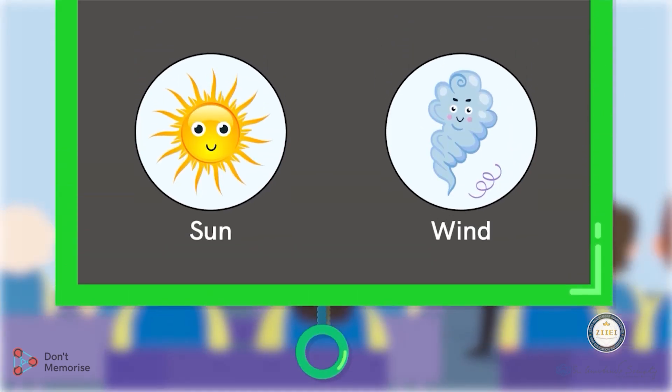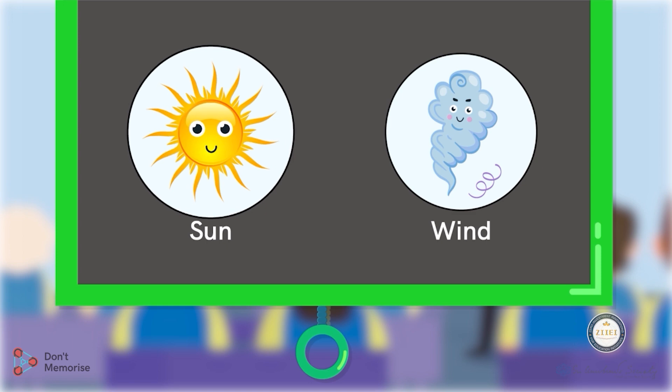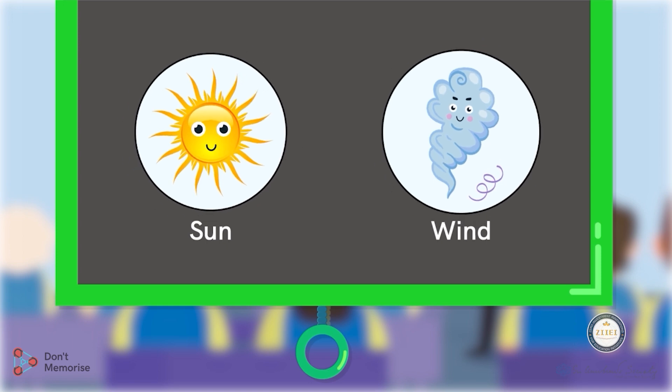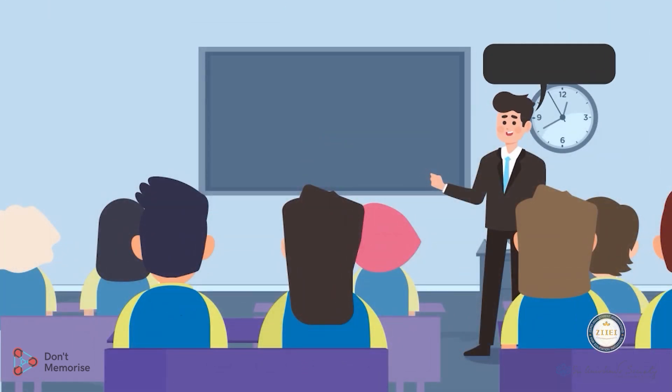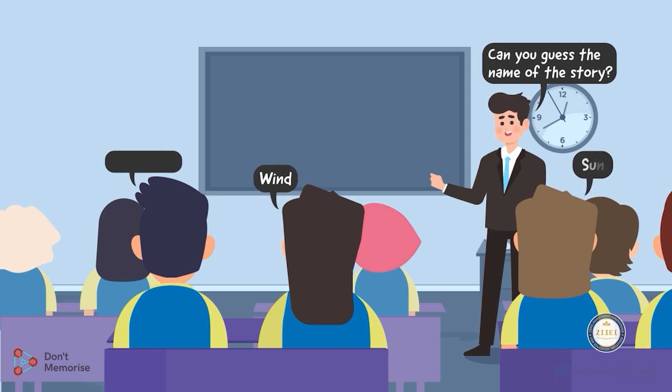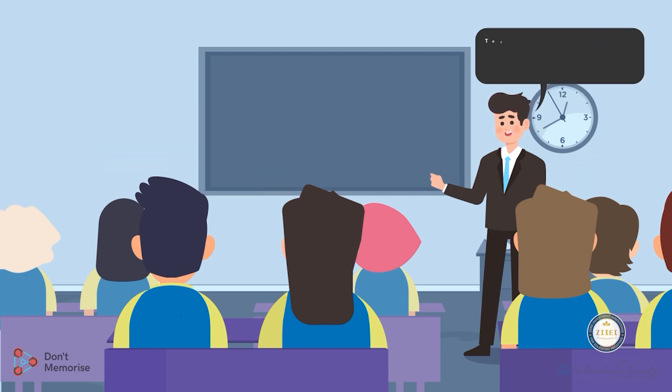Voila! We introduced the two characters of the story, which are the Sun and the wind. Now make the students guess the name of the story. The possible answers will be Wind, Sun, Wind and Sun, and so on.